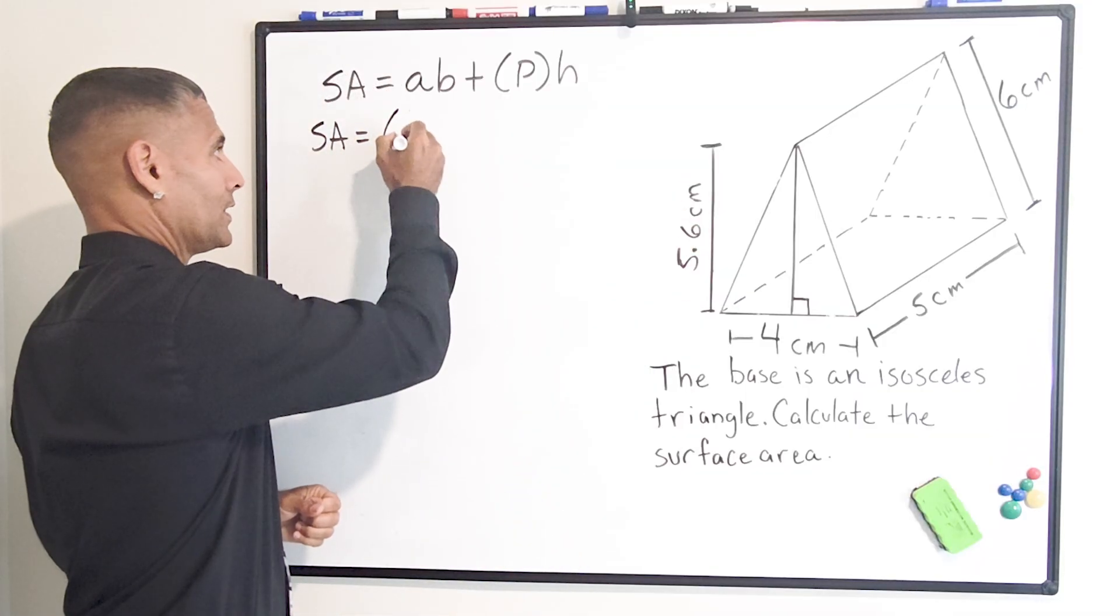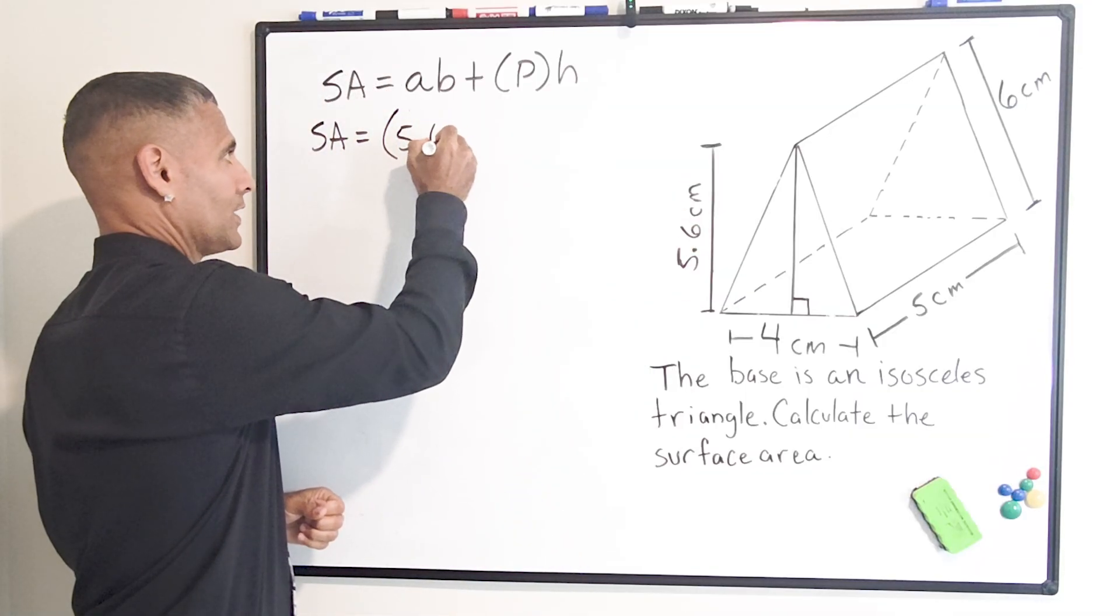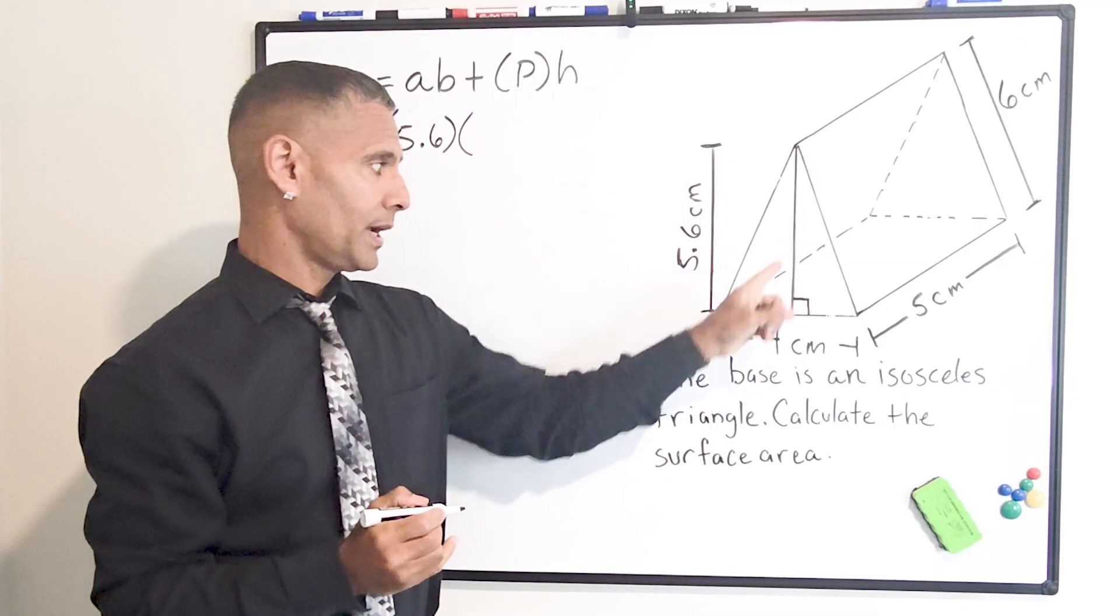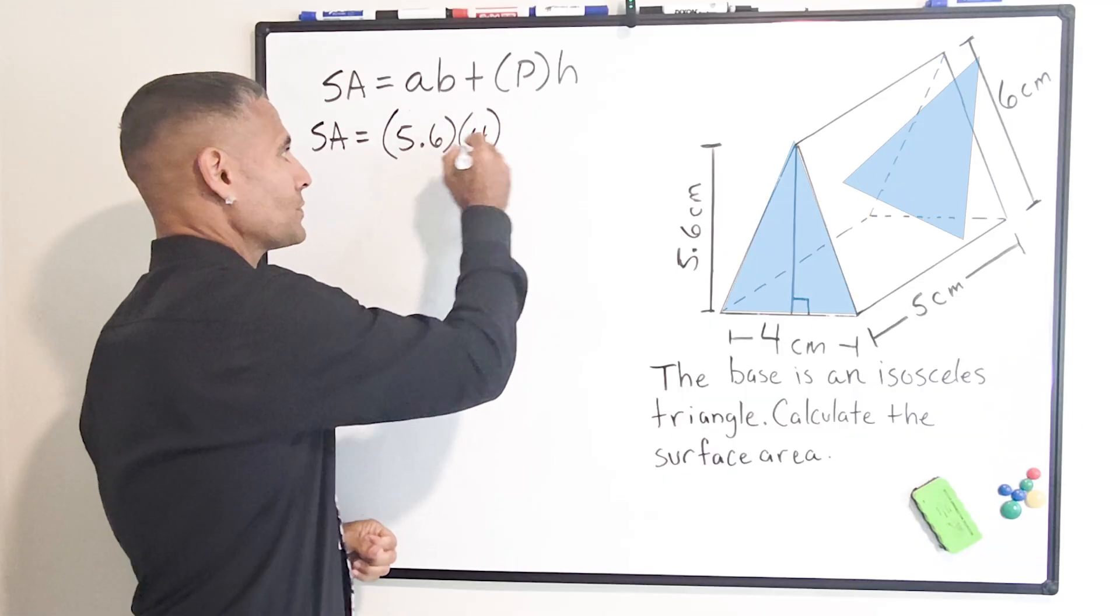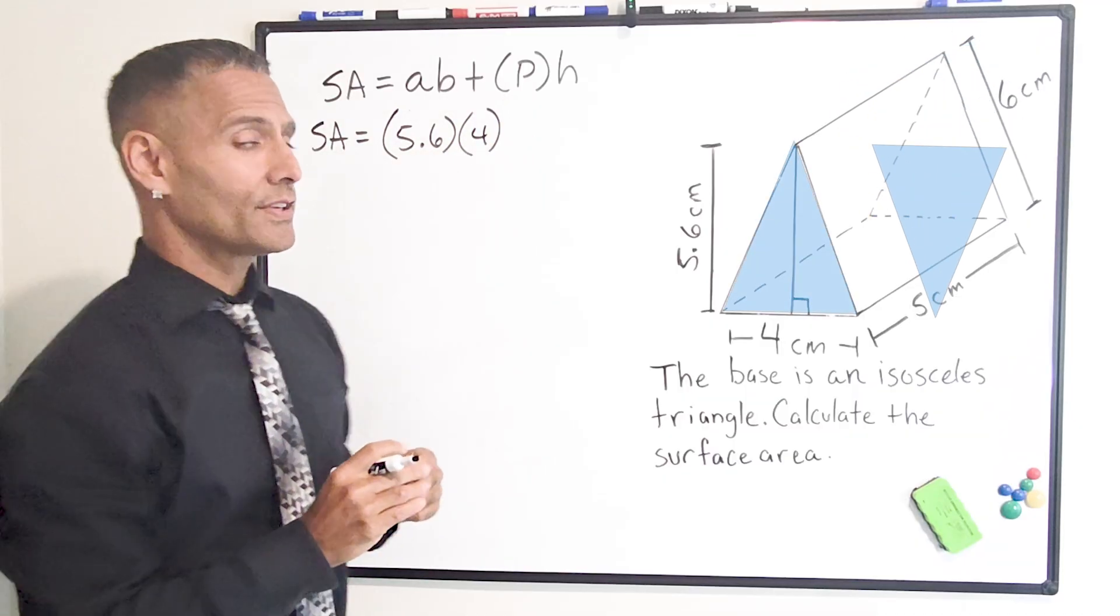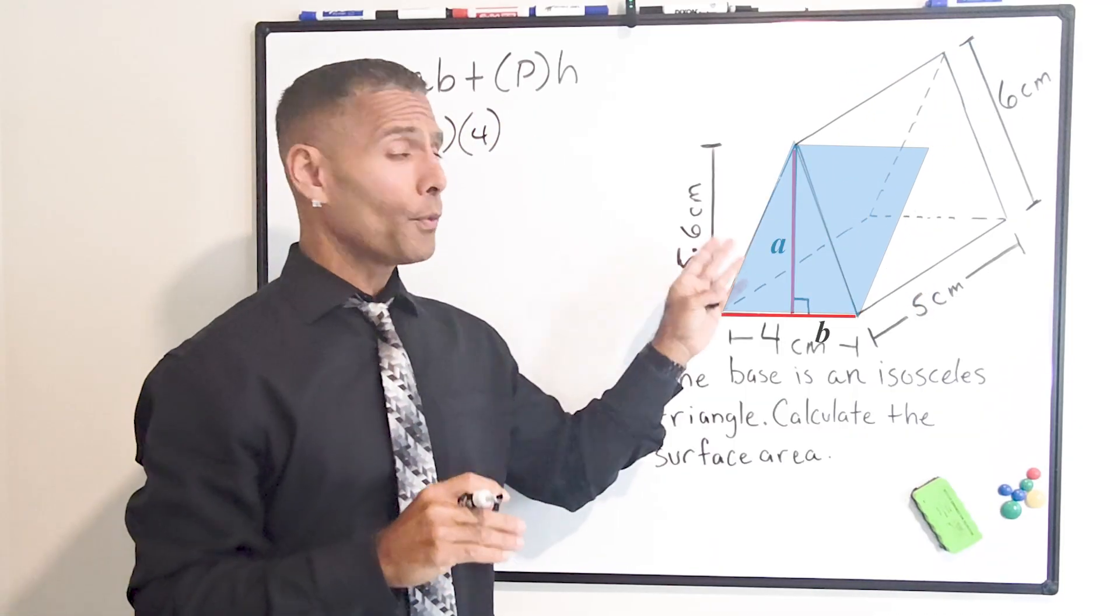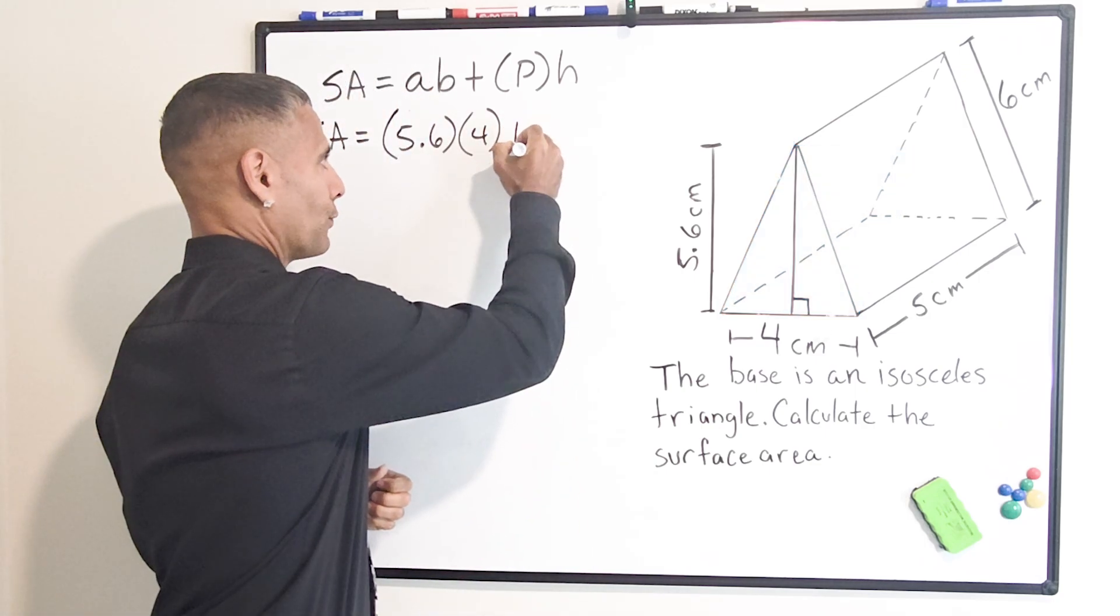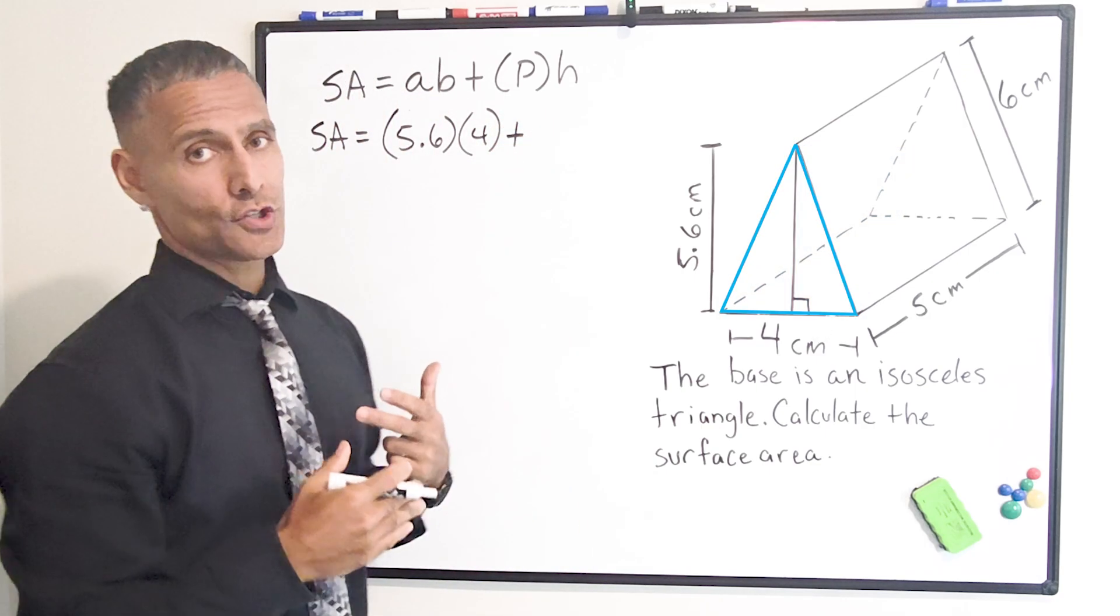So the altitude of this triangular face is 5.6. So we substitute A in the formula with 5.6. And we're going to multiply that by the length of this triangular base, which is four centimeters. Now, just multiplying these together is going to give us the total area of both of the triangular faces. Next, we're going to find the perimeter of one of the triangular faces.